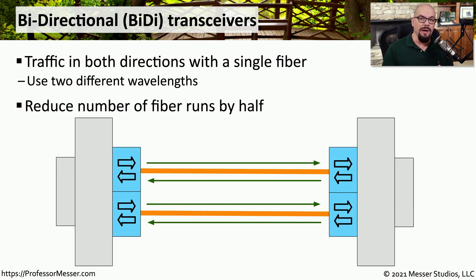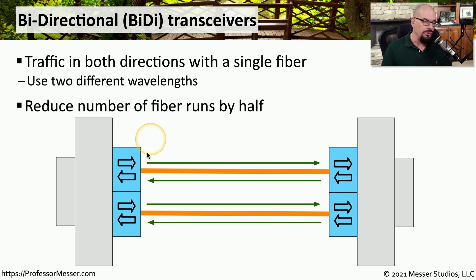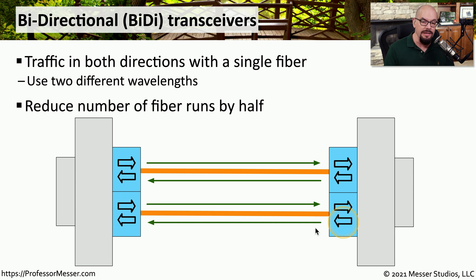There are times, though, where you might run into a limited number of fibers on a connection, and you may not have two fibers to be able to send and receive traffic across separate individual optic fibers. In that case, you may want to use a BiDi transceiver, or bi-directional transceiver. This allows you to both send and receive traffic over a single strand of fiber, so one wavelength of communication is being sent on the transmit side, and on that same piece of fiber, you have a receive side all being used on that same fiber connection. If you do happen to have two fibers, then you can run two individual connections, which effectively doubles the amount of connections that you would have had with a non-bi-directional transceiver.